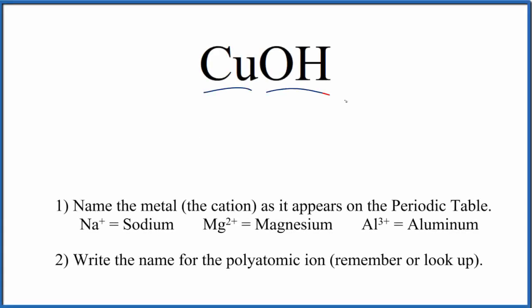To write the name for CuOH, we first need to recognize we have a metal, that's copper, and a polyatomic ion, a group of nonmetals. We have a metal and this polyatomic ion, so this is going to be an ionic compound.